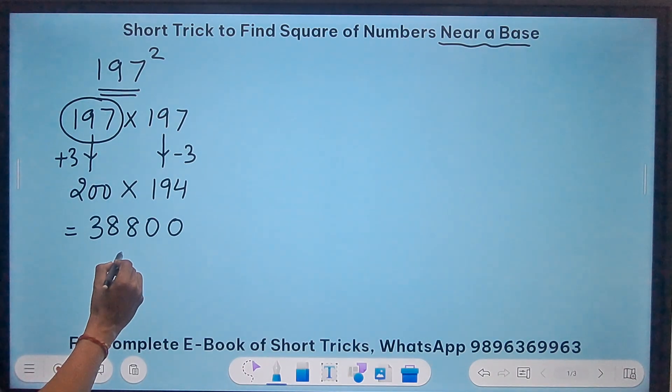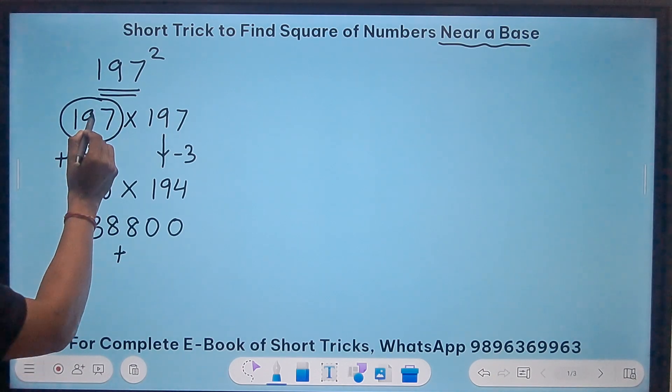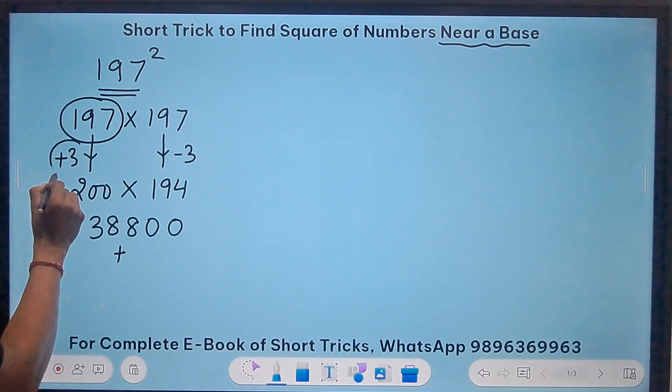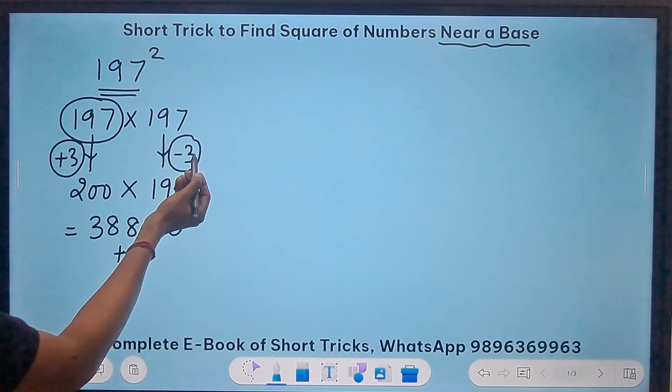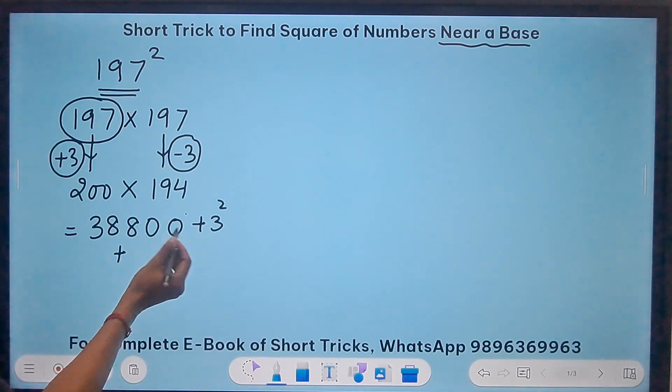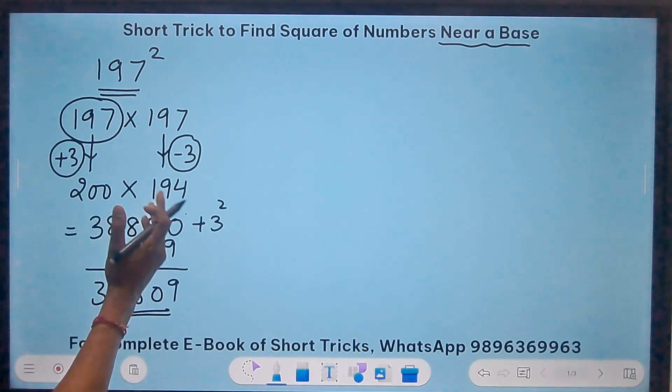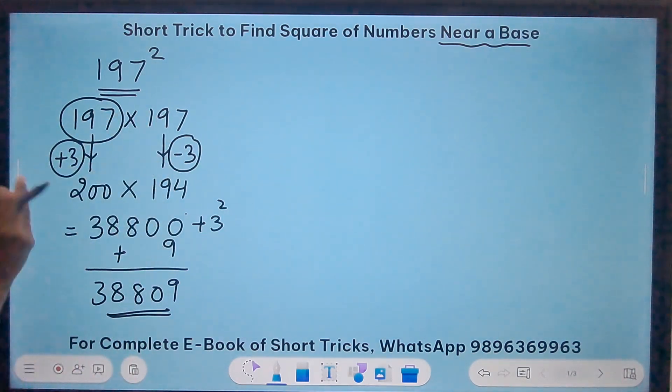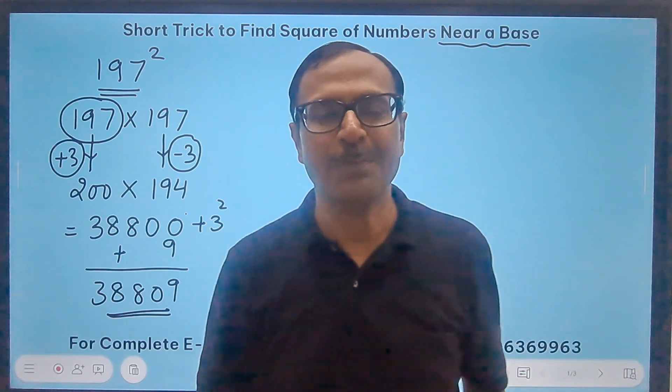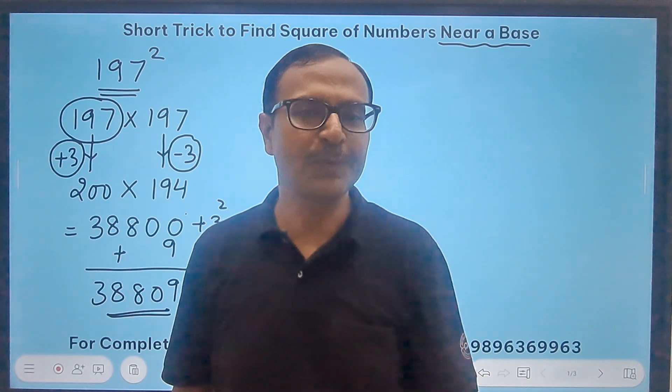What is to be added to this? How much did you add or subtract when you converted this number to a base number? 3. So just add 3 square to the result, and 3 square happens to be 9. So just add 9 to the result and now watch the magic. 38,809. Pick up your calculators friends and check 197 square. Is that 38,809? And you are really going to be amazed and surprised. Does it work for all numbers near the common base? I am going to prove it to you right now.